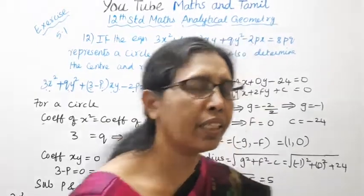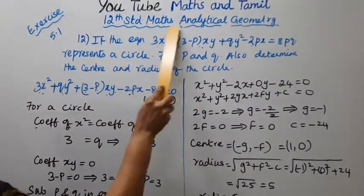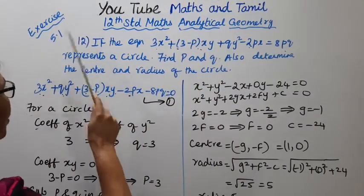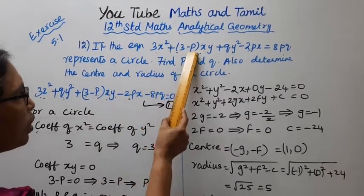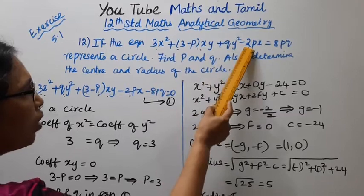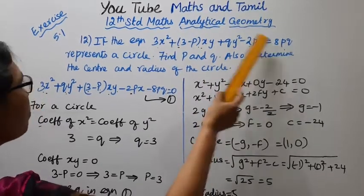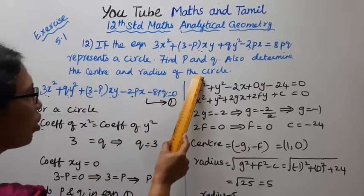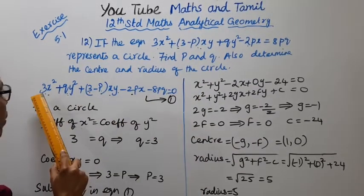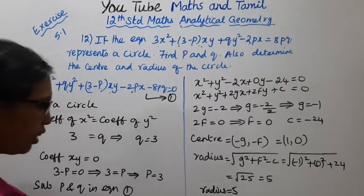Hello students, welcome to Max and Dramid channel. Transition and Max analytical geometry exercise 5.1, 12th term. If the equation 3x² + (3-p)xy + qy² - 2px = 8pq represents a circle, find p and q, also determine the center and radius of the circle.